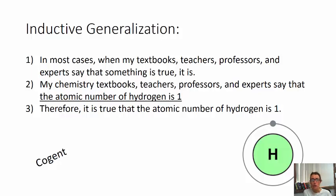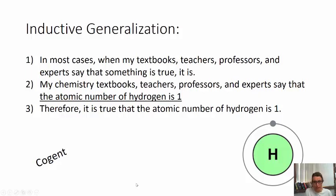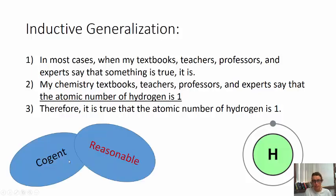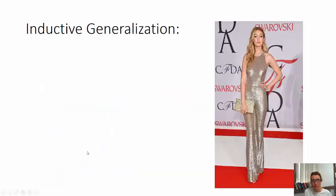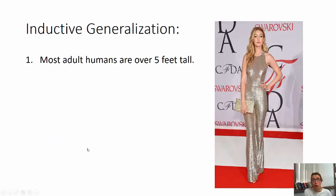Is it guaranteed that everything in your textbook and everything every professor says is one hundred percent true? Not guaranteed at all. But in general, what you're learning in college — they're probably telling you the truth. So this is a cogent and strong argument, and it's reasonable to believe it. Here's another one — an inductive generalization: most adult humans are over five feet tall, and GG Hadid is an adult human.